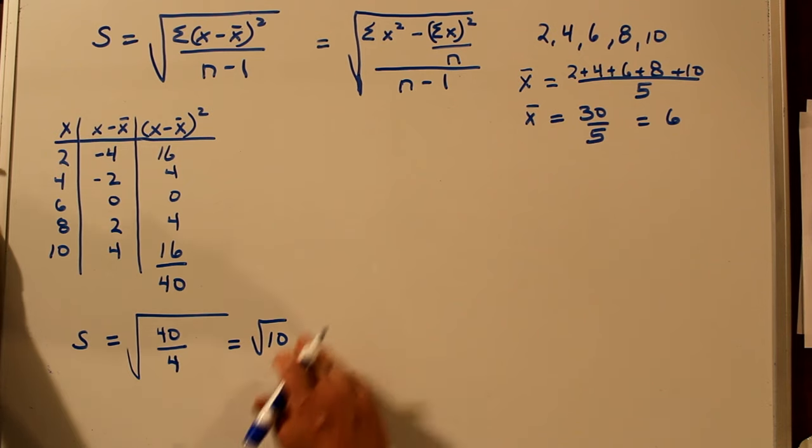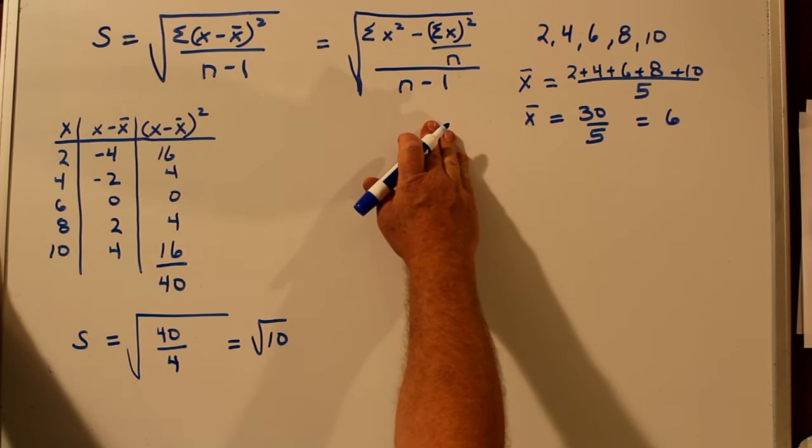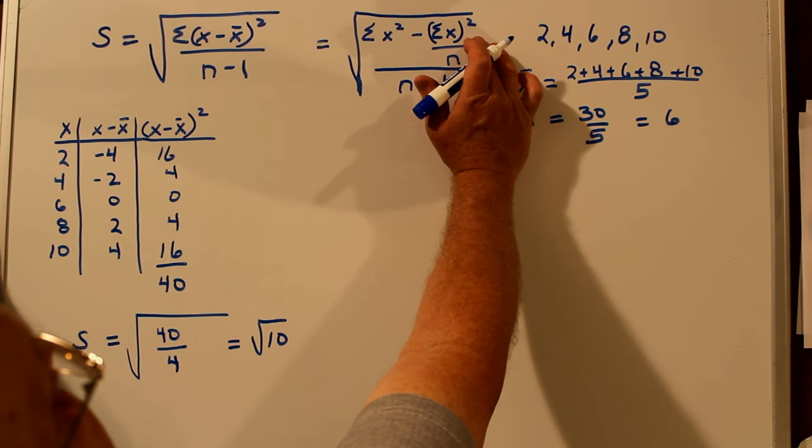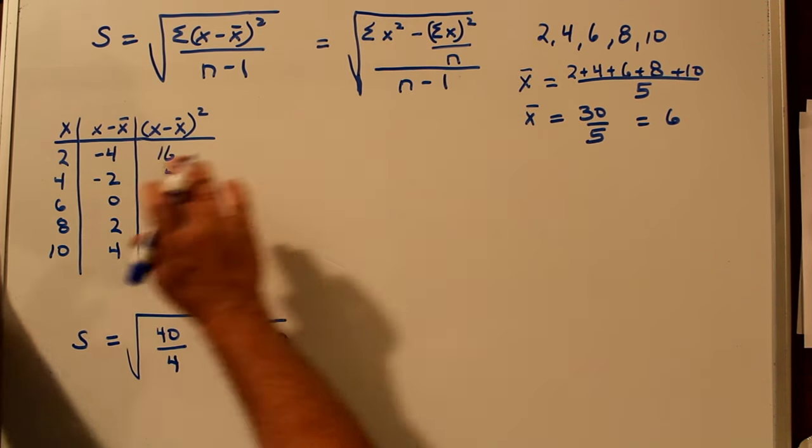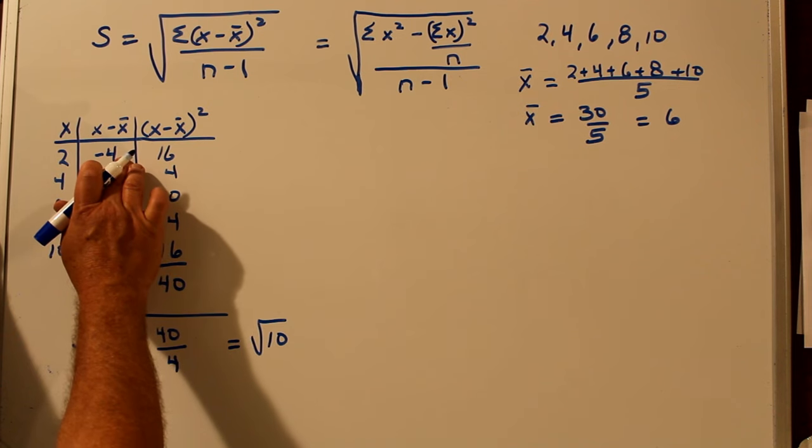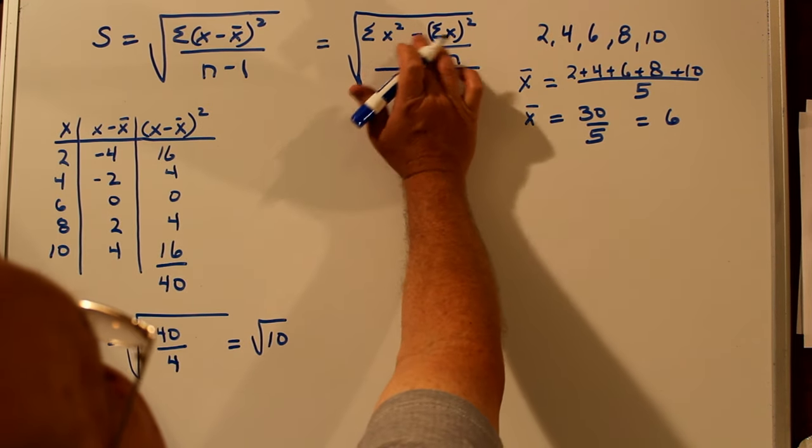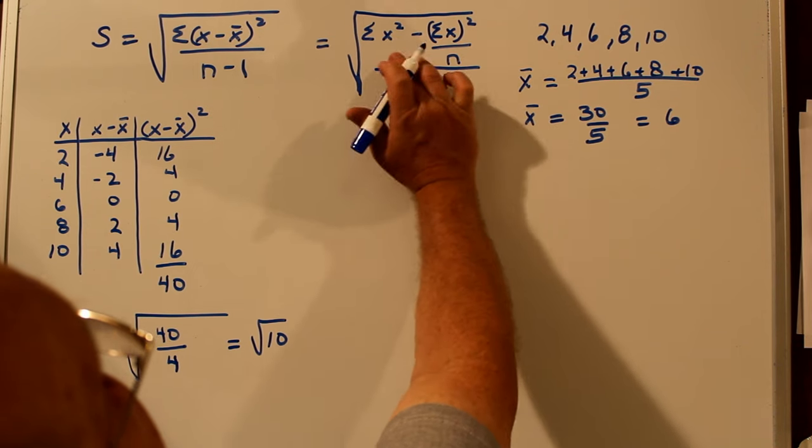Now let's find it using the shortcut method or the second formula. We need to know the summation of X squared. We need to know the summation of X. And we need n. Well, wait a minute. We don't need to know the mean. We don't need to know the difference from the mean. And we don't need to square the difference from the mean. We simply need to know X, X squared, and their sums.